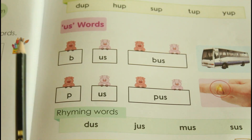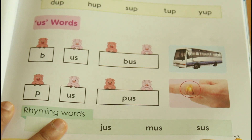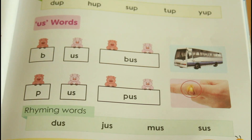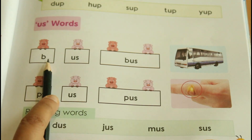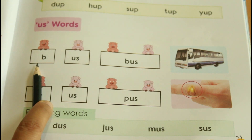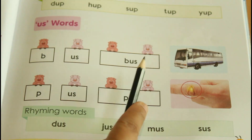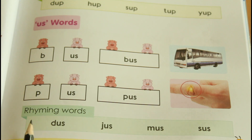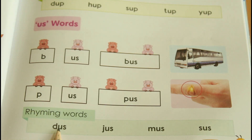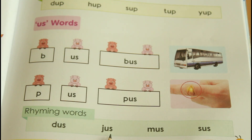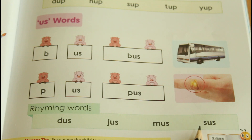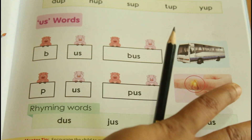The next word family is US. US words. B-us: bus. P-us: pus. And the rhyming words: das, jas, mas, sus. These are the US family words.